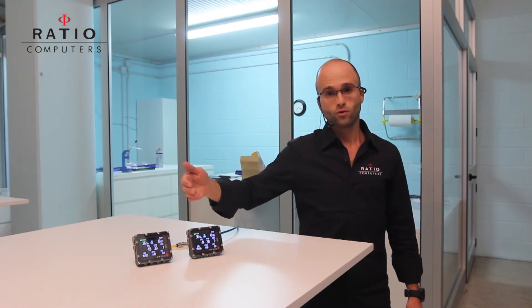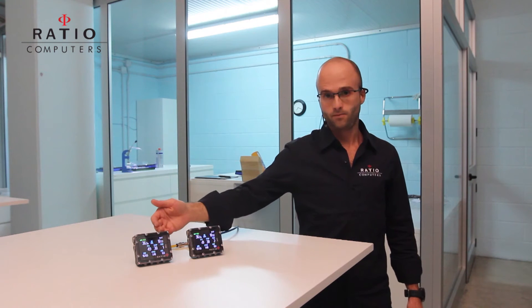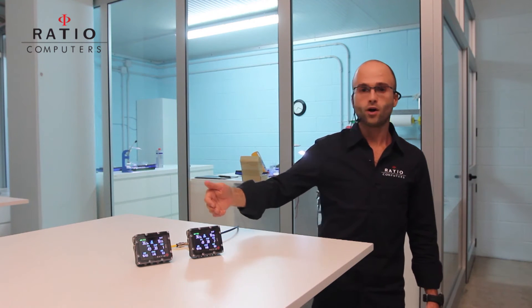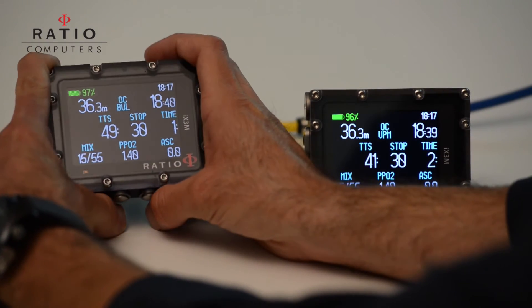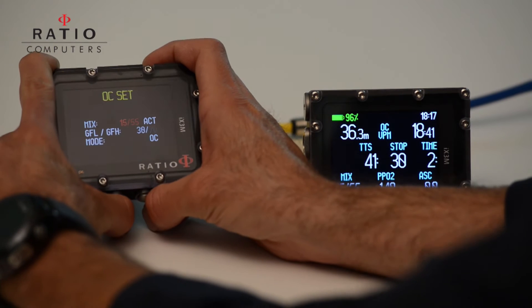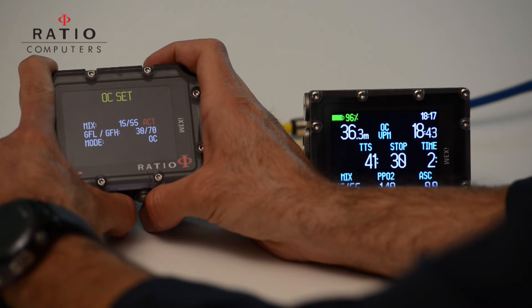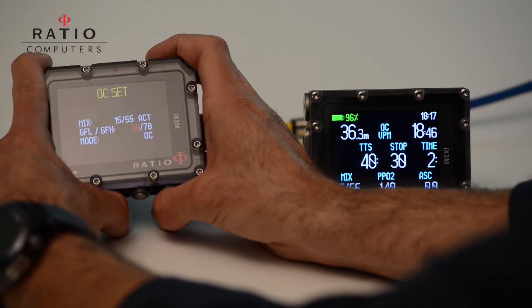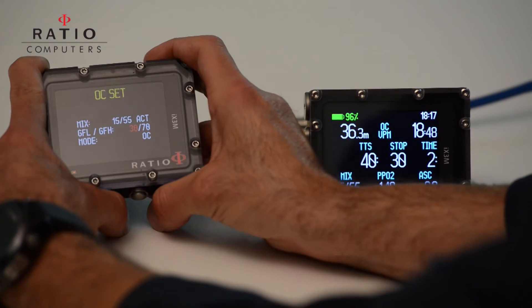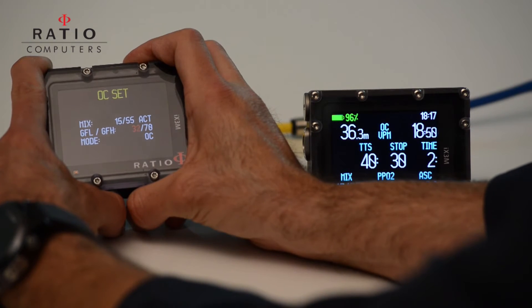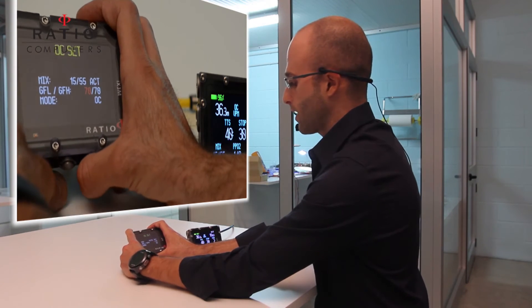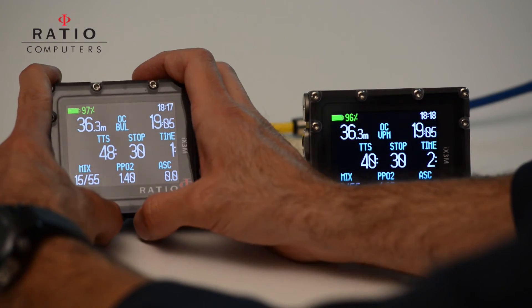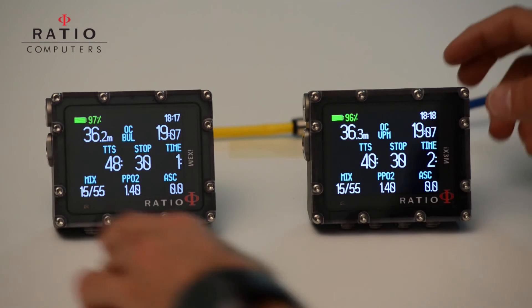You can reconfigure your decompression profile. I will show you how to do it. Let's first change the gradient factors on Buhlmann. For example, I will bring the gradient factor low to a higher level. I put it at 70 percent, the same like the gradient factor high.